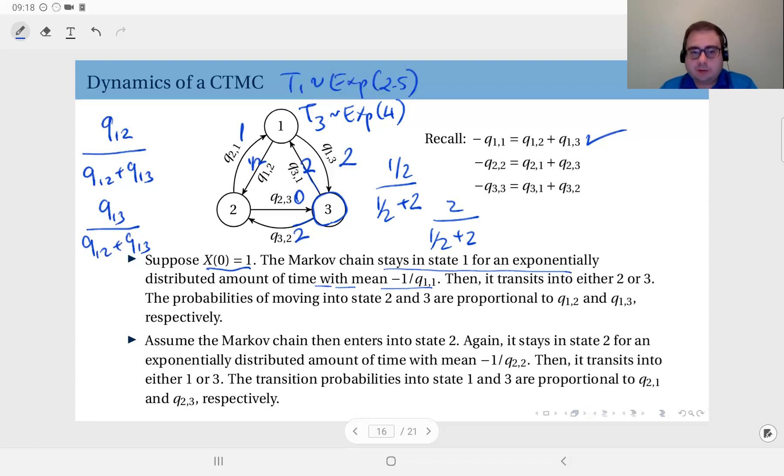And upon exit, since the rates are equal—2 to state 1 and 2 to state 2—the Markov chain will choose state number 1 or state number 2 with equal probabilities as the next state.